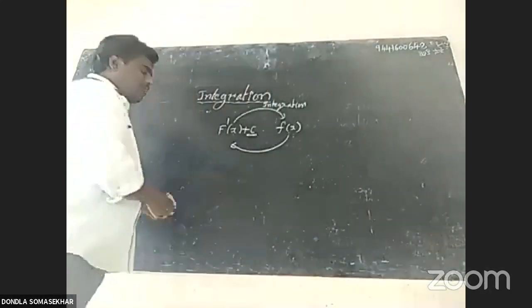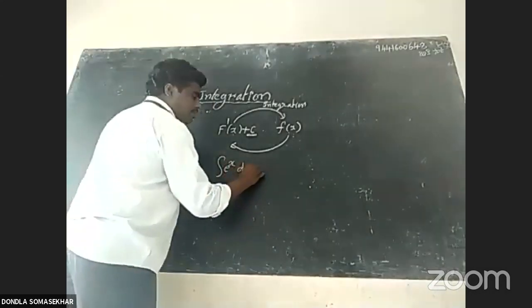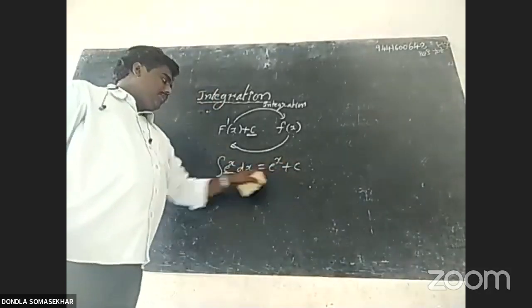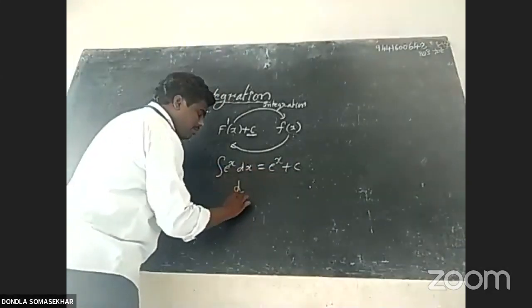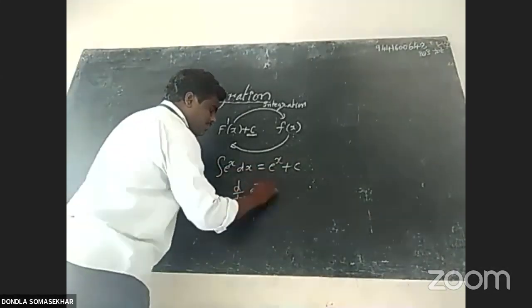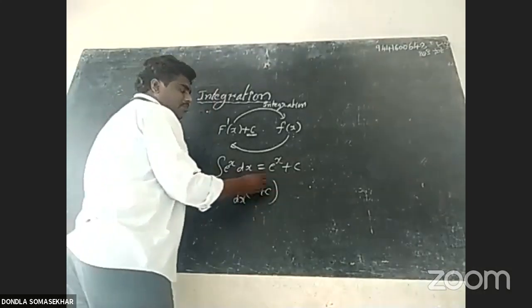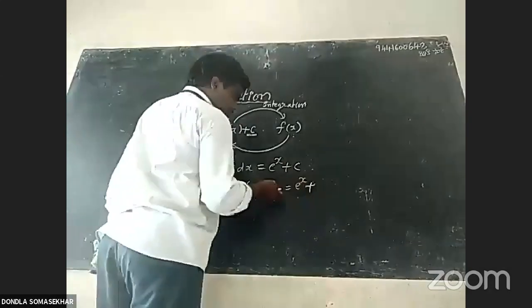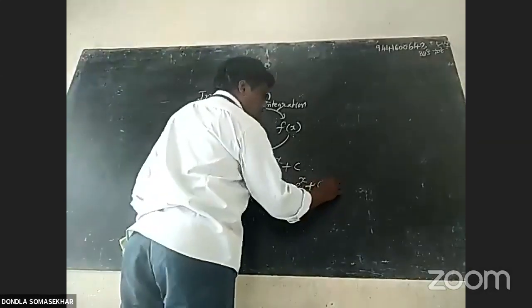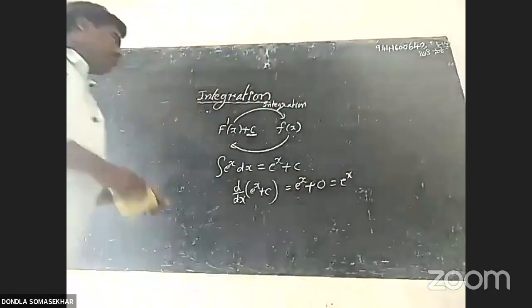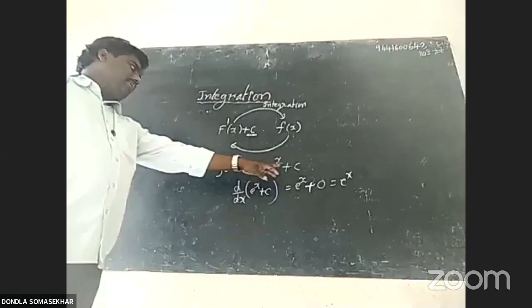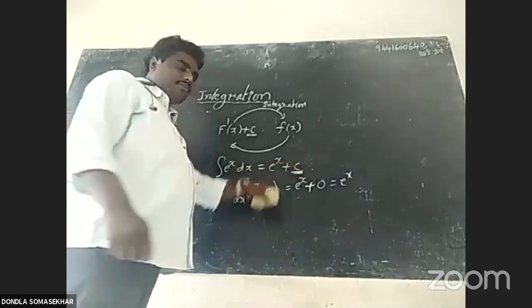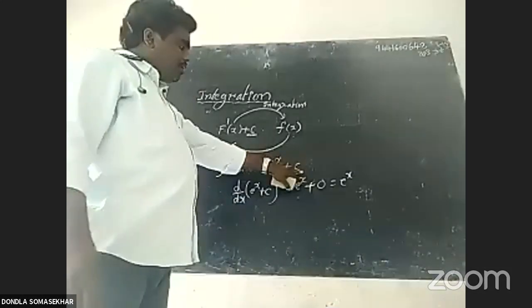Take one more example. Integral of e power x dx is equal to e power x plus c. The derivative of e power x plus c: d by dx of e power x is e power x, and d by dx of constant is zero, so we get e power x. That is why we must write the constant of integration c.